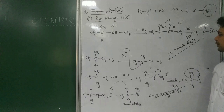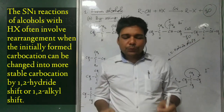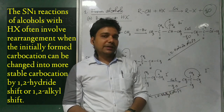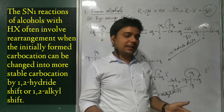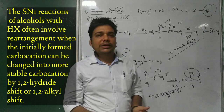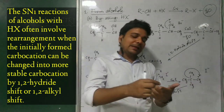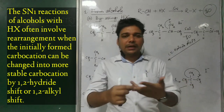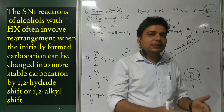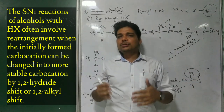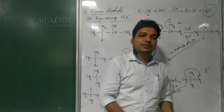These are certain examples which involve rearrangement. We need to think about rearrangement steps whenever the alcohol undergoes SN1 reaction with halogen acid and if the initially formed carbocation can be converted into a more stable carbocation — like a tertiary carbocation or an allylic carbocation. Generally these rearrangements occur through a 1,2-hydride shift or a 1,2-alkyl shift.